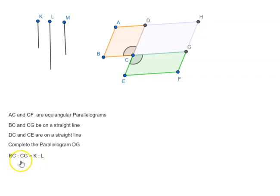So that BC is to CG equal to K is to L. Similarly, now that we have L.